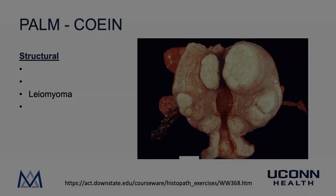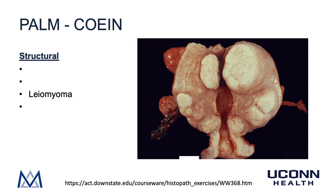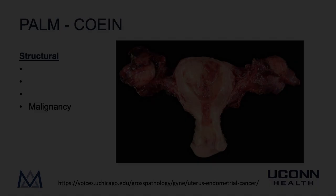Next is leiomyoma for the L in PALM. Leiomyomas are common benign smooth muscular growths arising from the smooth muscle of the uterus. Fibroids are classified by their location: fibroids just under the visceral peritoneum are called subserosal; fibroids mostly within the muscle are called intramural; and fibroids abutting the endometrial lining are called submucous. It is really the submucous fibroids that are responsible for abnormal uterine bleeding.